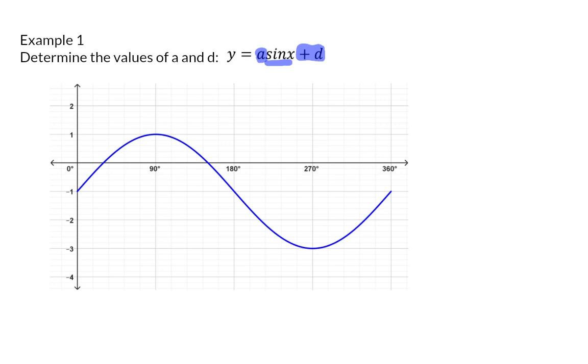It is useful to always start determining the a value, because the a value shows us the amplitude of the graph. The amplitude of the graph is the distance between the maximum of 1 and the minimum of minus 3 divided by 2. So in our example, we can say that the amplitude is that distance of 4 divided by 2, which will give us an a value of 2.